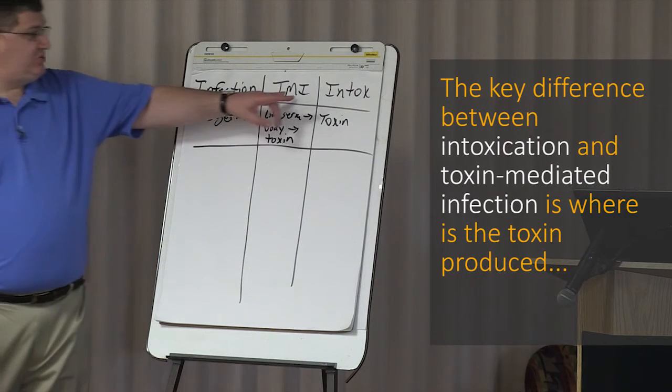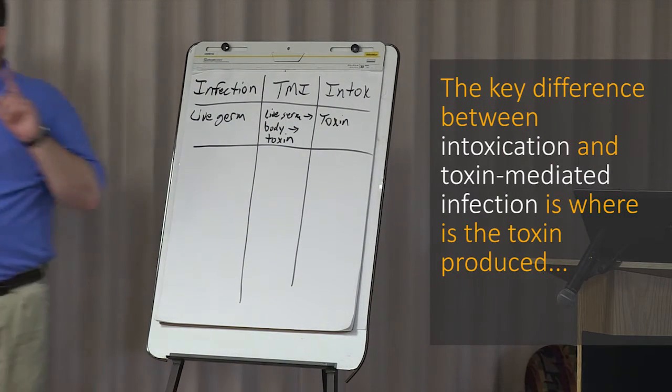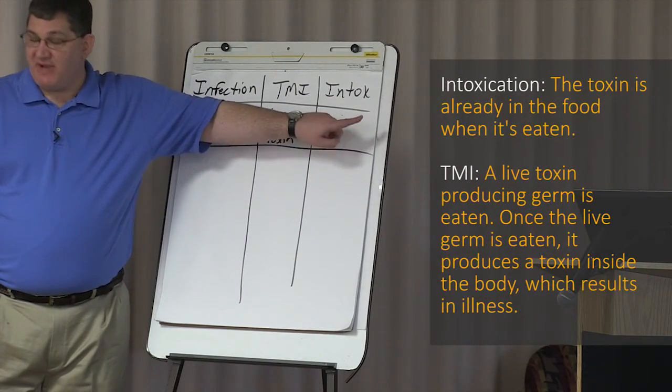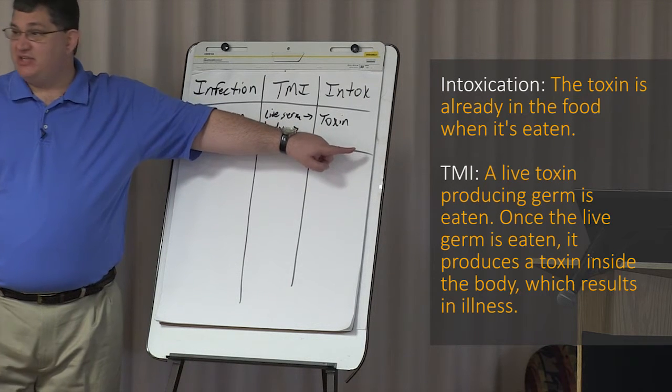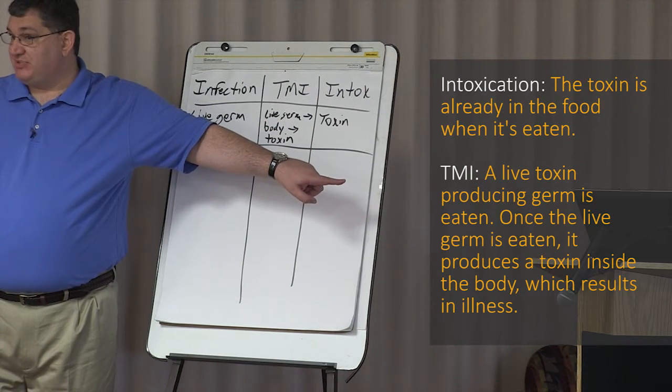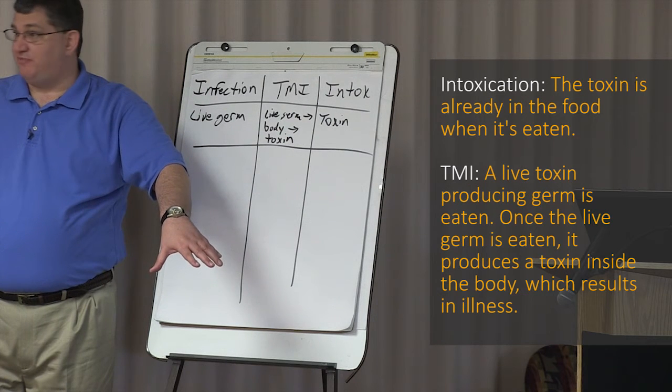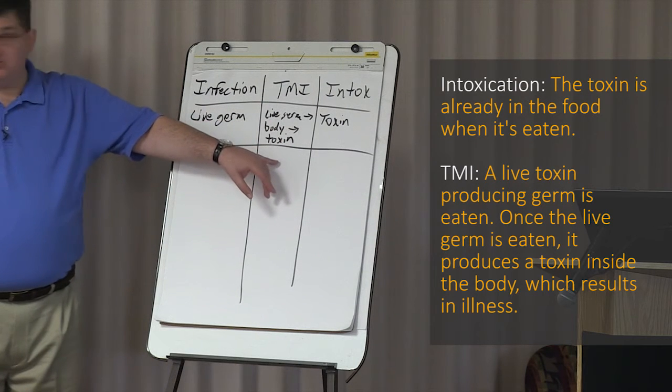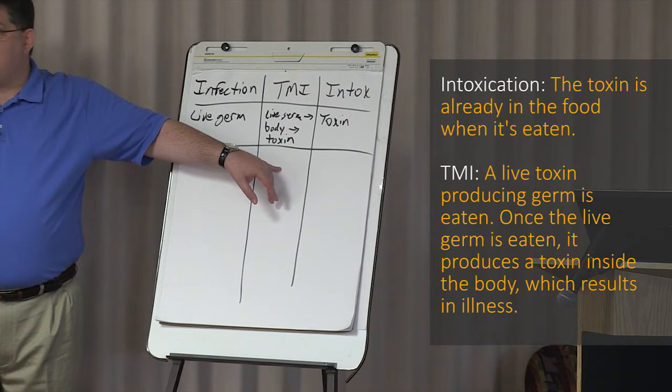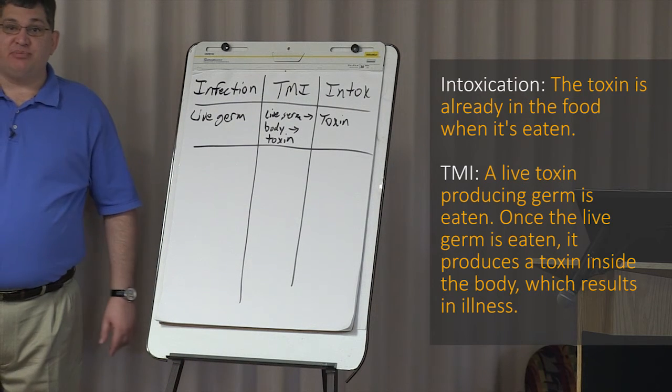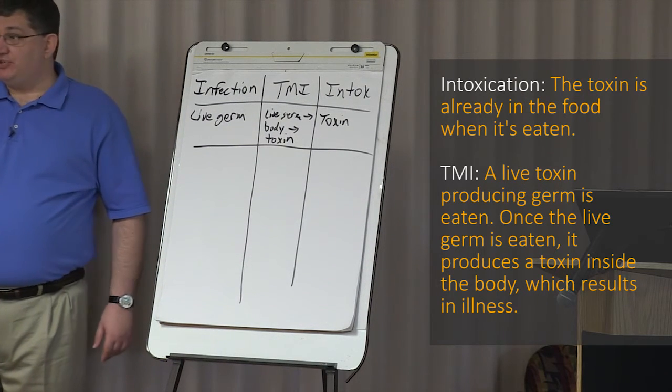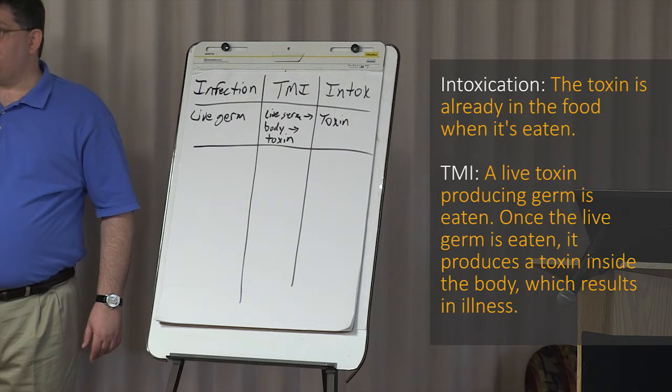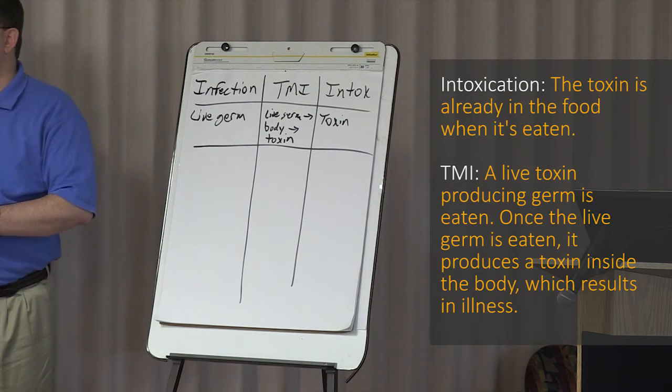The key difference between the TMI and the intoxication is where is the toxin produced. If I'm eating something that's an intoxication like botulism, the botulism toxin is already in the food when I eat it. But for something like E. coli, that's a toxin-mediated infection, I eat the live germ, and when the live germ gets in my body, it produces a toxin inside my body, and that is what will produce the illness.